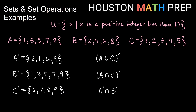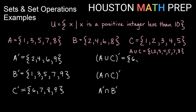Let's look at complements involving unions and intersections. First, let's figure out what's in the parentheses and then take the complement. So A union C first — all things in A or in C or both: 1, 2, 3, 4, 5 from C, and then 7 and 8 from A. We did this a bit earlier. Now we want the complement — all things not in this that are in the universal set. Looking at 1, 2, 3, 4, 5, 7, 8, the only numbers in the universal set not there are 6 and 9. So that is our (A union C) complement.